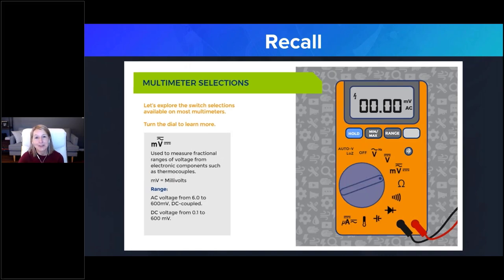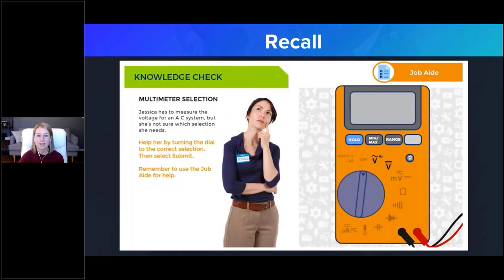All we've really done is add a dial to an interaction, but we're helping the learner build those connections by reinforcing text with a graphic representation and the act of turning the dial as you would on the actual device. Then we reinforce those connections by presenting a potential application for the learner to recall in the field — in this case, asking the learner to turn the dial to the setting used to measure voltage for an AC system.